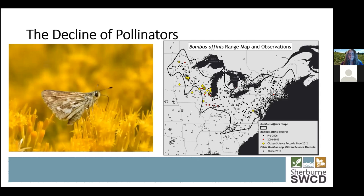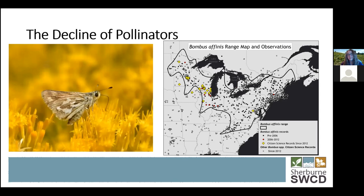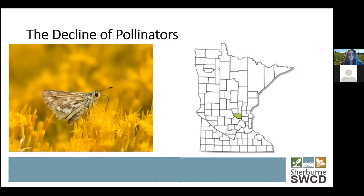The next pollinator of local concern is the Uncas Skipper. You might recognize the name because it is found in the Uncas sand dunes in Sherbourne County. According to the DNR website, Sherbourne County is the only county highlighted for this butterfly because the Uncas Skipper really only has a sustainable population in the Uncas sand dunes. Because it requires that sand dune habitat, which is being altered as development closes in, there are some very specific plant species in that habitat that it relies on.